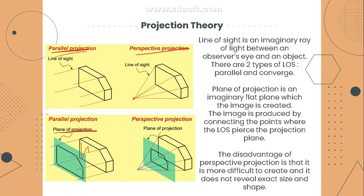The disadvantage of perspective projection is that it's more difficult to create and does not reveal exact size and shape. Because the lines converge in one point, the area we can connect becomes smaller. You have to find the exact point where they connect — and the resulting plane of projection is smaller compared to the original face. That is why in engineering drawings, parallel projection is more commonly used for both line of sight and plane of projection.